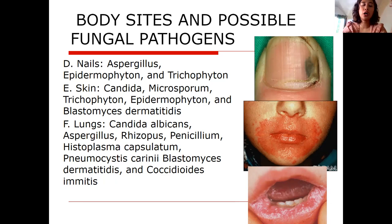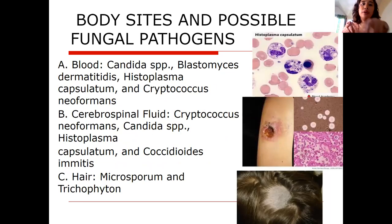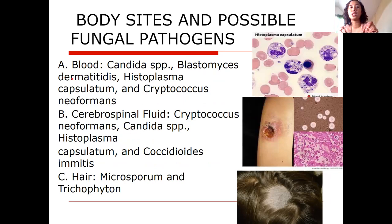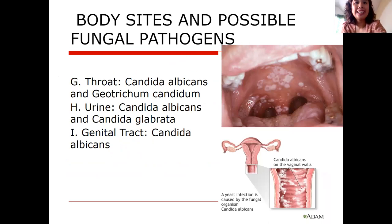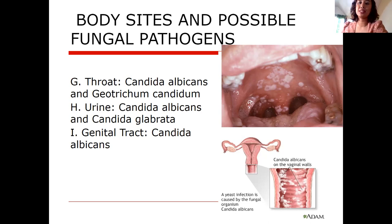Note the proper scientific name notation — the genus starts with a capital letter and the species with a lowercase letter. In throat: Candida albicans and Geotrichum candidum. In urine: Candida albicans and Candida glabrata. In genital tract: Candida albicans. If in doubt about which fungal species to answer in an exam, a safe answer is Candida albicans.